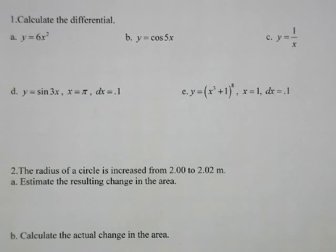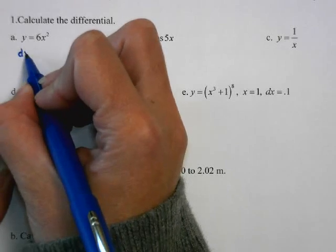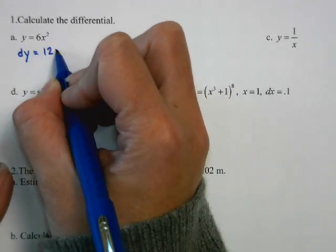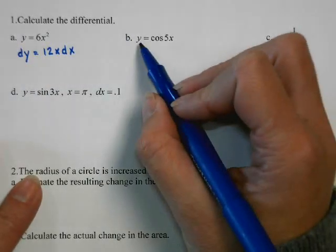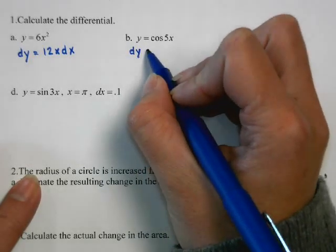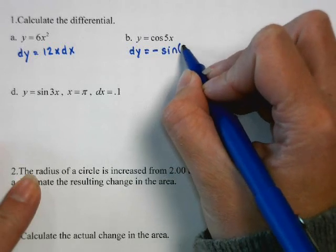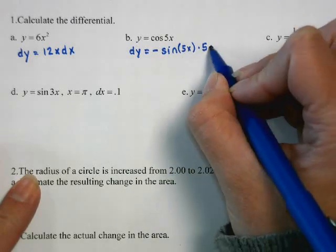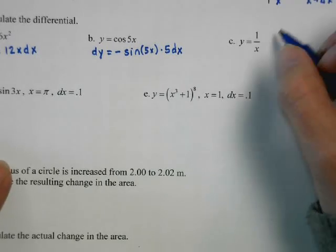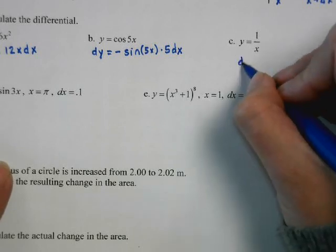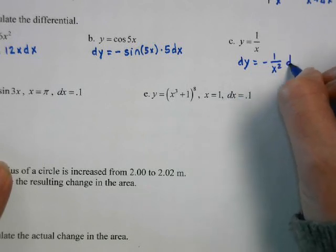We're going to calculate the differential. If y is 6x squared, then dy equals 12x dx. For the next, dy equals negative sin(5x) times 5 dx. And then dy equals negative 1 over x squared dx.